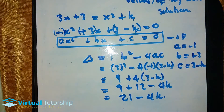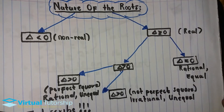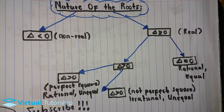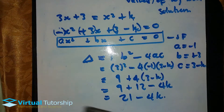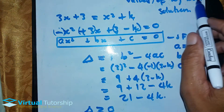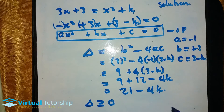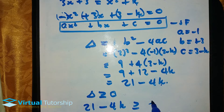Now I'm looking for values of k for which the equation has real solutions. From the mind map, the only time an equation has real solutions is when delta is greater than or equal to zero. So my delta must be greater than or equal to zero in order for the equation to have real solutions. Therefore, 21 minus 4k must be greater than or equal to zero.